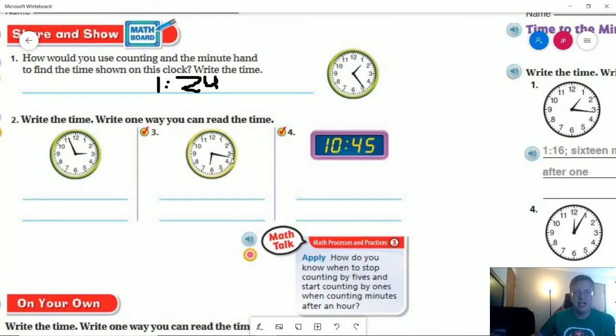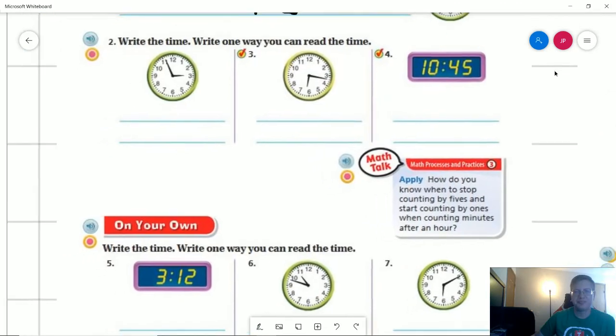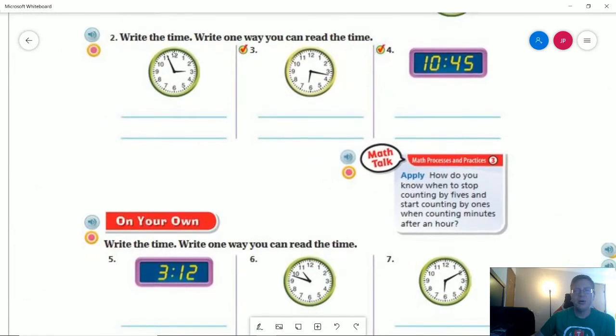Number three, write the time and write one way you can read the time. The time is currently between 6 and 7 and we are at 5, 10, 15, 16, 17 minutes after 6 so we can write 6:17 and we can say 17 minutes after 6.